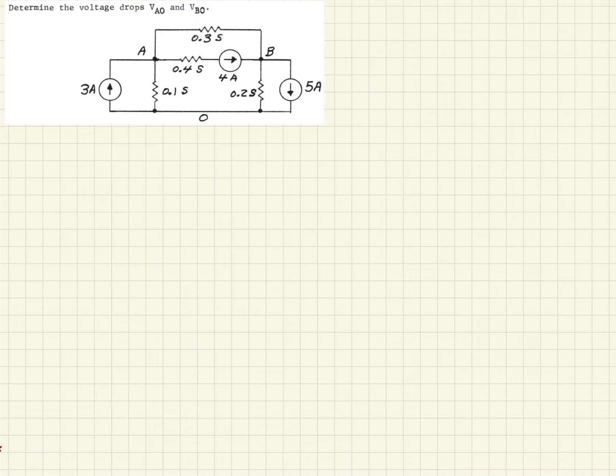We're going to do nodal analysis. We'll look at both the nodes and look at the current entering and leaving those nodes and summing them up, which they should equal zero. Let's look first at this node A.